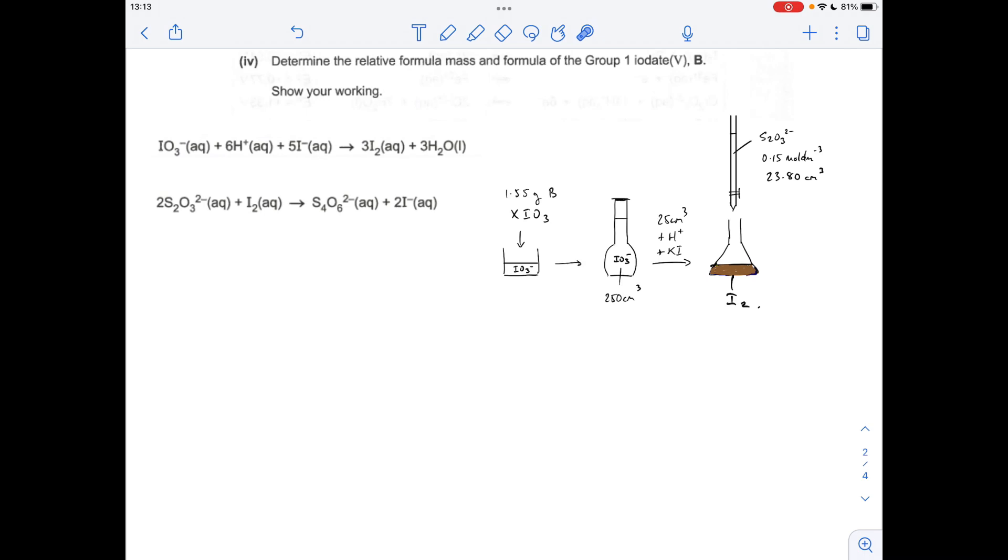Basically, they've taken a known mass of B, which is XIO₃ - it contains the IO₃⁻ ion and a Group 1 metal ion. That generates aqueous IO₃⁻ ions. It's then put into a 250 cm³ volumetric flask, and then 25 cm³ of the IO₃⁻ is taken out, reacted with acid and excess KI, and that generates iodine.